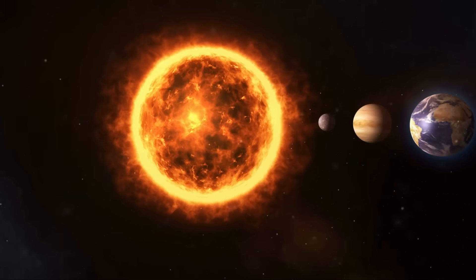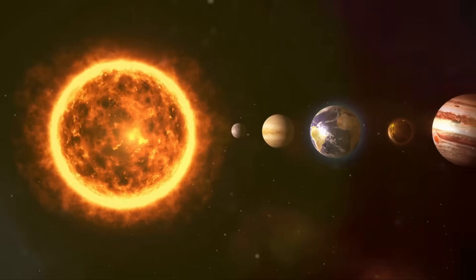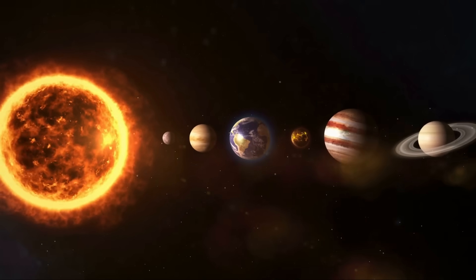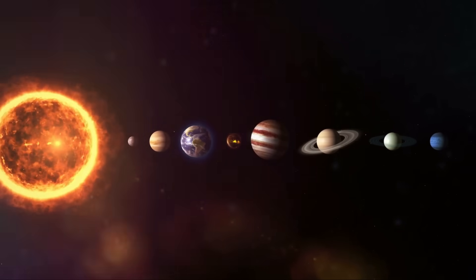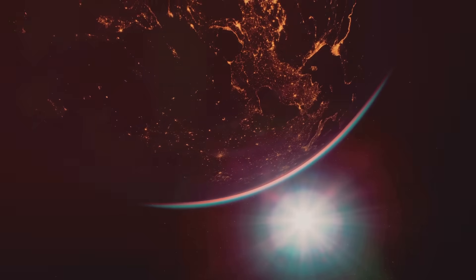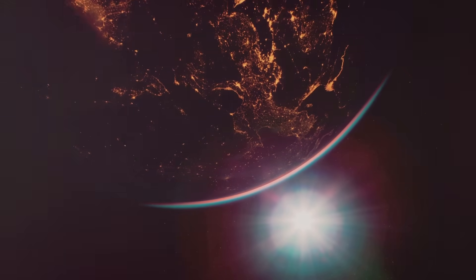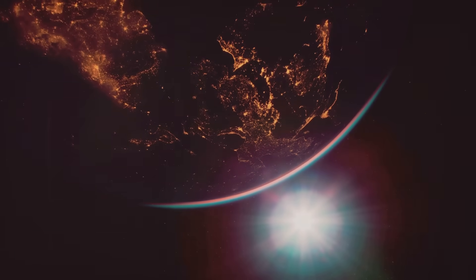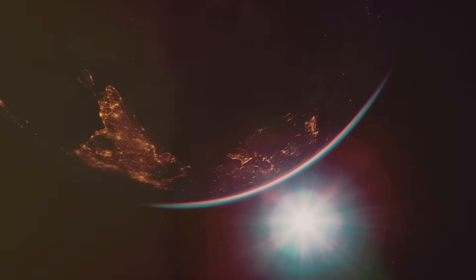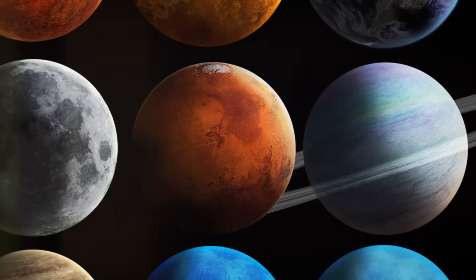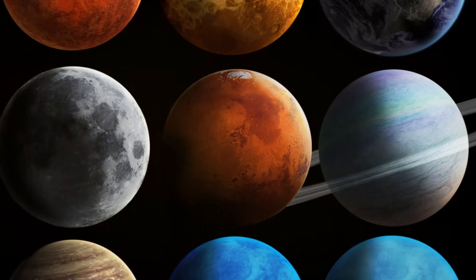These tiny particles are created at the boundary of our solar system, where the sun's solar wind collides with the interstellar medium, the stuff that fills the space between the stars. When this collision happens, charged particles from the solar wind can steal an electron from the interstellar medium, turning into a neutral atom. These neutral atoms aren't affected by the sun's magnetic field and can travel in straight lines right back to IBEX.